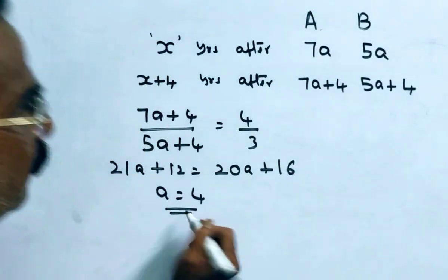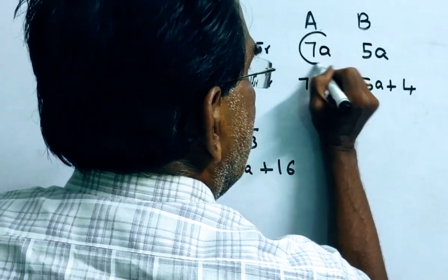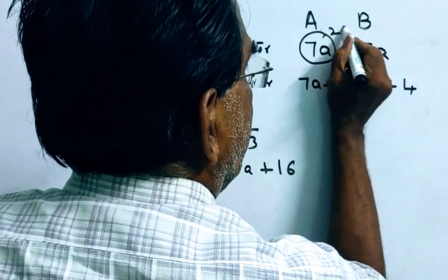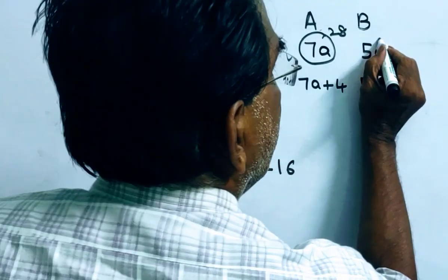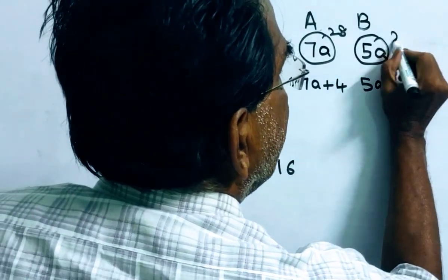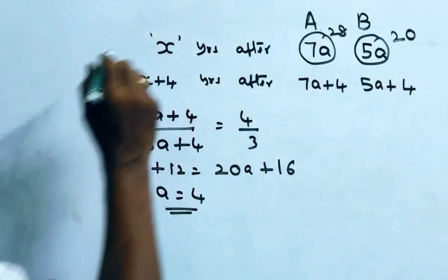A equals 4, so 7 times 4 equals 28. A will be 28 after X years. B will be 20 years after X years.